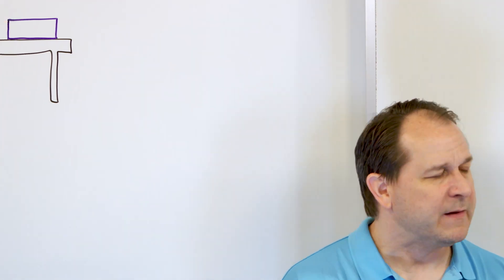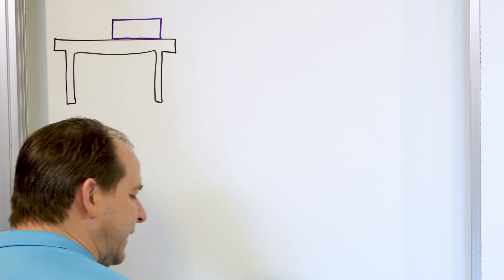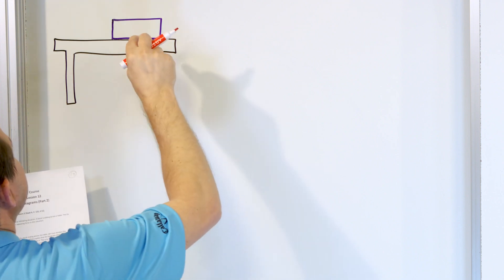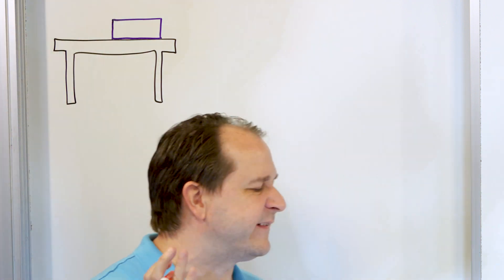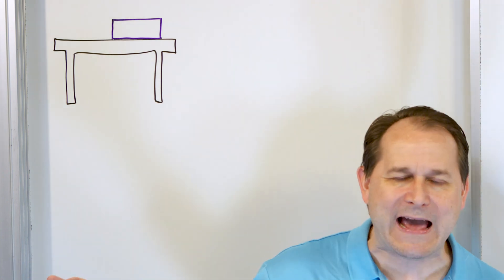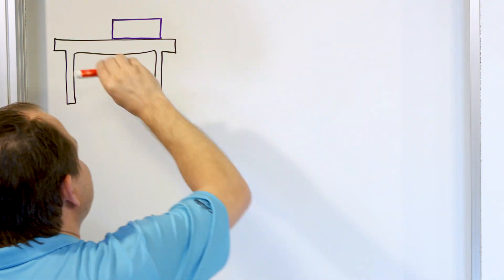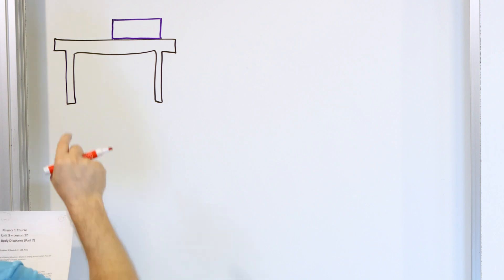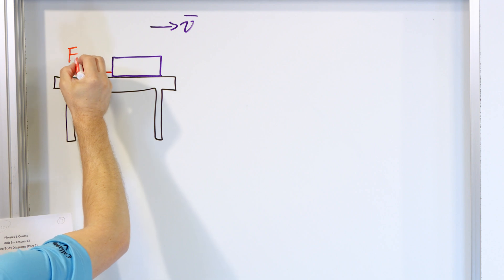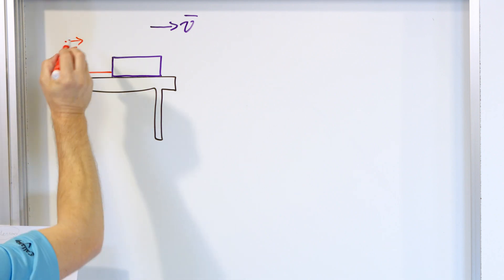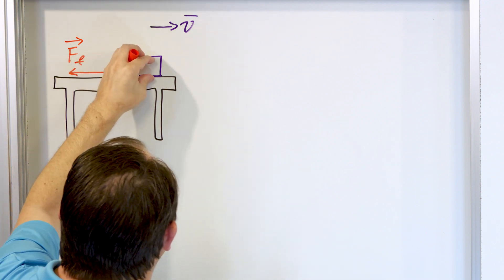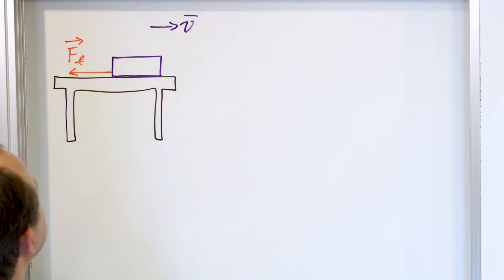Let's do our best to draw some of these forces acting on this book — this is not yet the free body diagram. We know there is no pushing force because it just says it's sliding across the table; that pushing has already happened in the past. Since it's moving to the right, there has to be a frictional force acting in the opposite direction. We'll call it F sub F — it's a vector quantity opposing the velocity, slowing the book down.